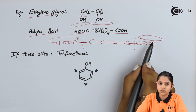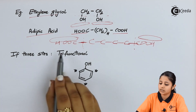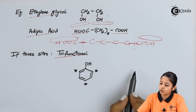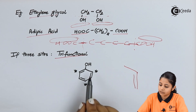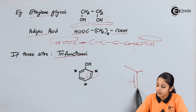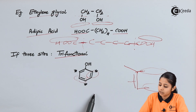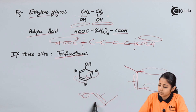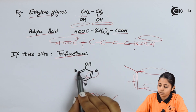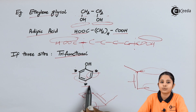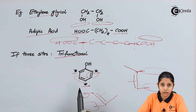The third type is a trifunctional site, with phenol as an example. Phenol is a benzene ring with an OH group attached. The benzene ring has alternating double bonds; breaking any of these double bonds frees one bond on each carbon. There are three such positions marked with asterisks on the ring where linkage is possible, making phenol trifunctional.